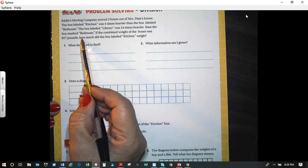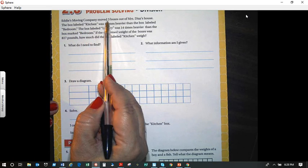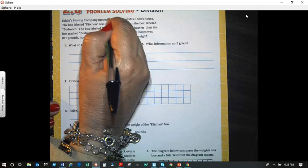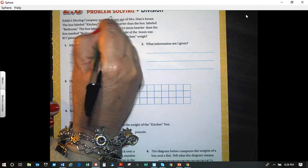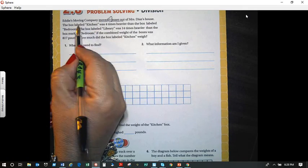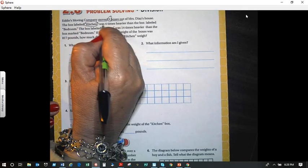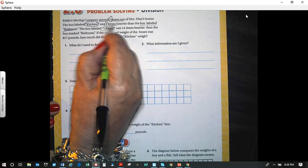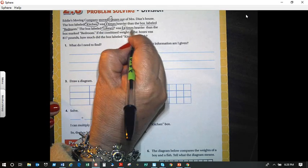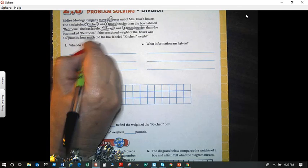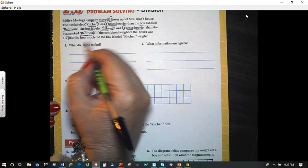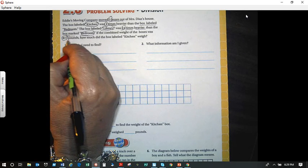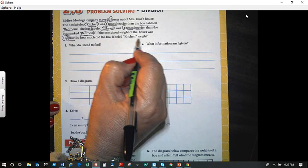So let's read this together. Eddie's Moving Company moved three boxes out of Mrs. Diaz's house. The box labeled kitchen was four times as heavier as the box labeled bedroom. The box labeled library was 14 times heavier than the box marked bedroom. However, if the combined weight of the boxes was 817 pounds, how much did the box labeled kitchen weigh?